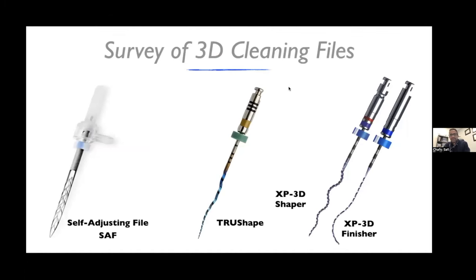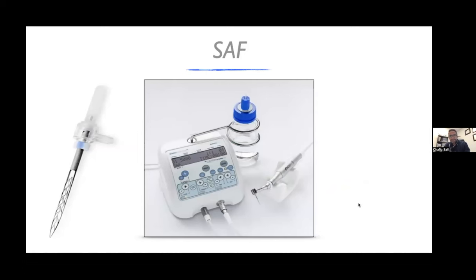In the early 2000s, around 2005, ideas of three-dimensional cleaning came back into the endodontic world. If you take a survey of 3D cleaning files today, we have the first file system that appeared on the market — the self-adjusting file, or SAF — and we have TrueShape, and the latest generation: the XP3D Shaper and the XP3D Finisher. Just to give the SAF some credit, it has been proven to clean the root canal system very conservatively, respecting the initial anatomy and very predictably.